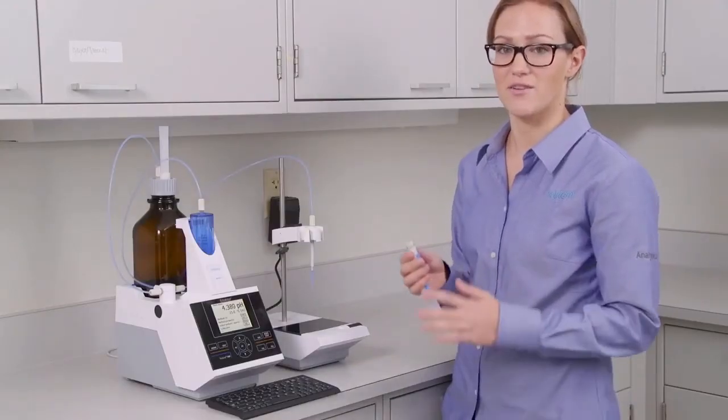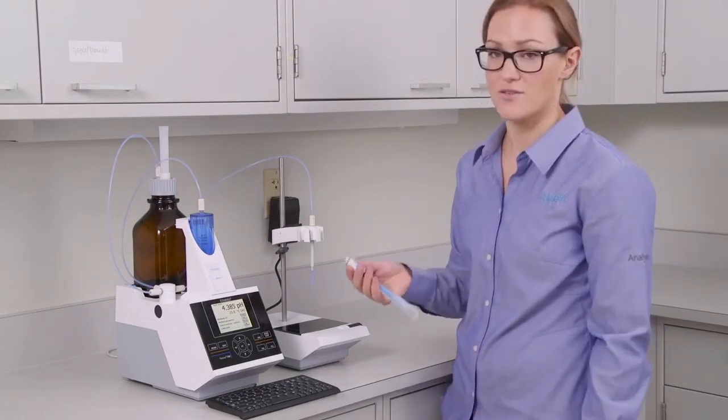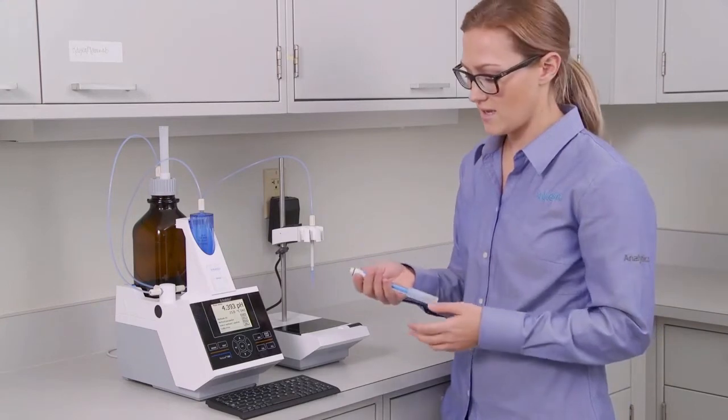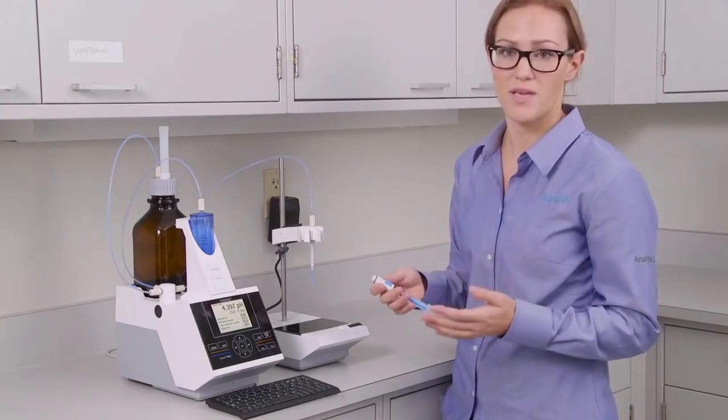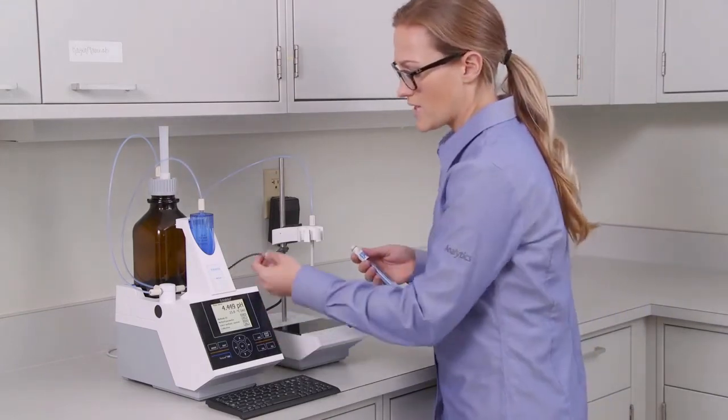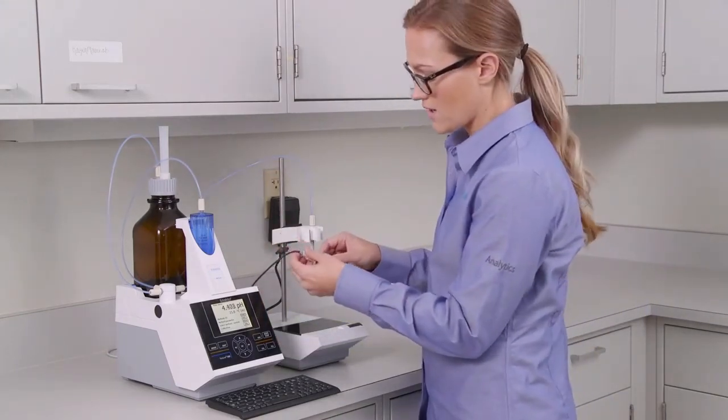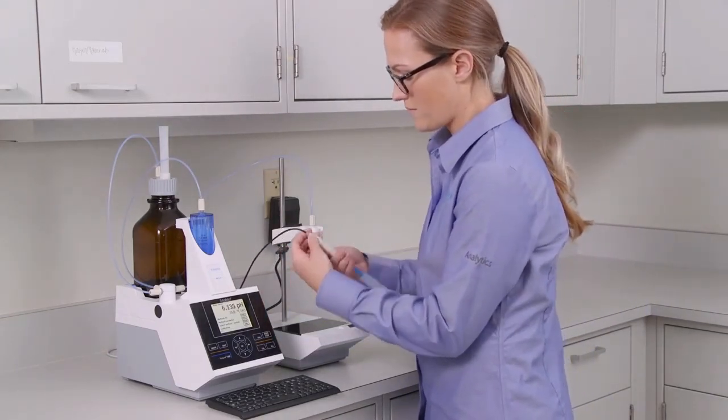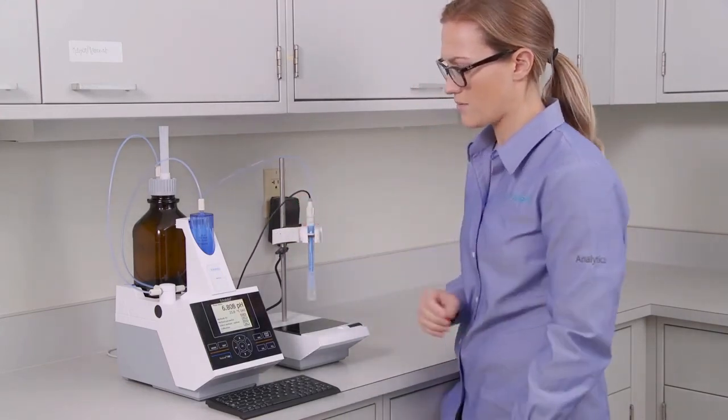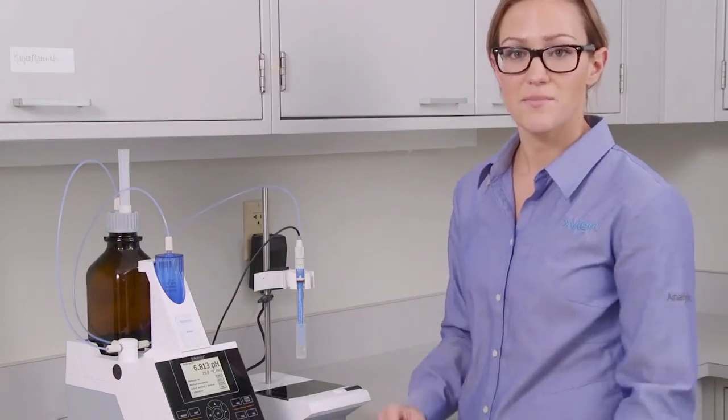The final step to getting your complete titrator setup is your electrode. Now you may be using a number of electrodes. In this case we're just going to be working with a simple pH combination electrode - this is our blue line 11. You'll take the other end of your electrode cable and just connect it to the top of your probe. And you'll take your probe and put it on top of the clamp like so. And it's as simple as that.